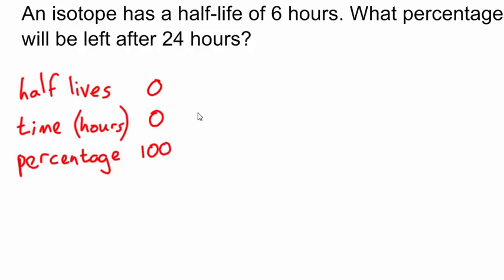Each half-life is 6 hours, so let's go up in steps of 6 hours. Plus 6, 12, 18, and 24, which would be 1, 2, 3, 4 half-lives.